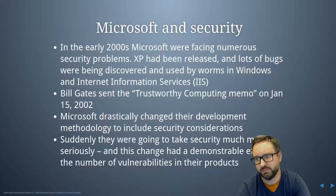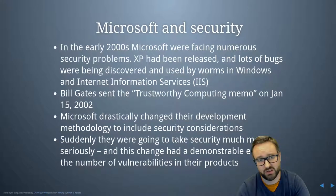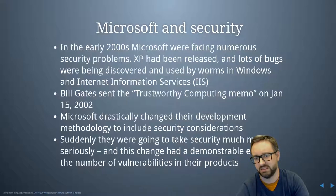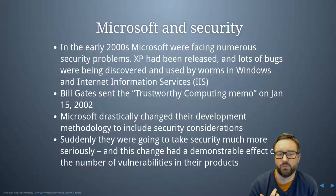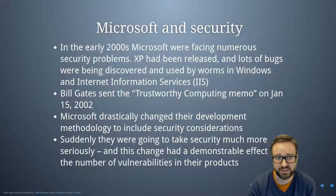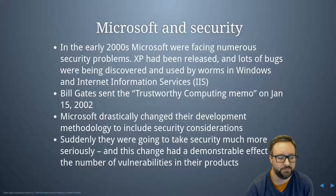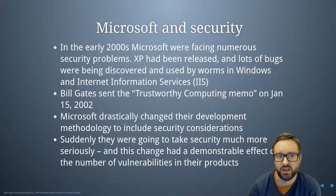In the early 2000s, Microsoft were facing numerous security problems. Windows XP had been released and there were loads of bugs being discovered and used in worms — things like Blaster — and these huge high-profile attacks against Windows XP systems. IIS, the web server at the time, was also riddled with security problems. Microsoft had not been doing what we were talking about — they weren't being proactive about considering security at every stage of development. Microsoft were also in a market-dominant position where there was a high benefit for attackers targeting those systems, which created a perfect storm of massive security problems.